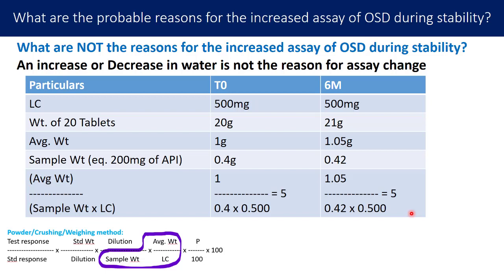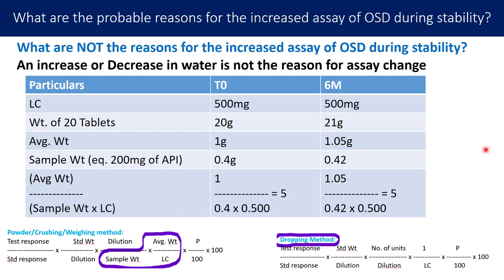In the crushing technique, the calculation formula contains this factor — average weight divided by sample weight divided by label claim — and since this factor does not change with water content variation, water change does not affect assay. In the dropping method, there is no sample weight involved, and the label claim in the formula does not change, so water content change has no impact there either.